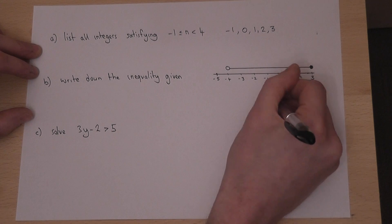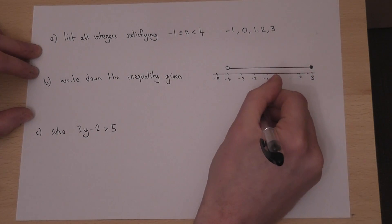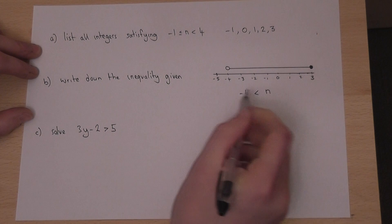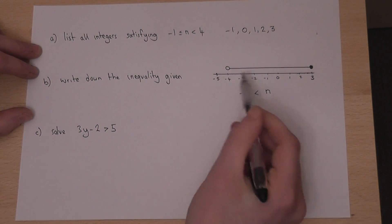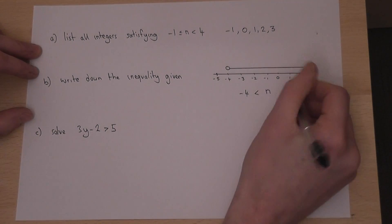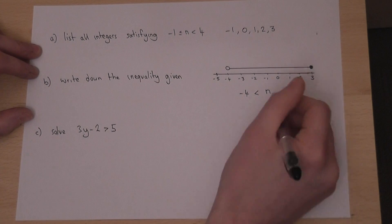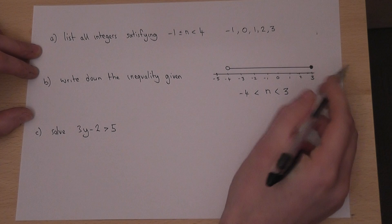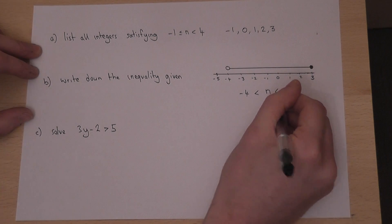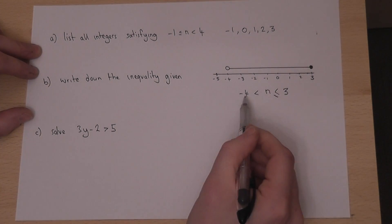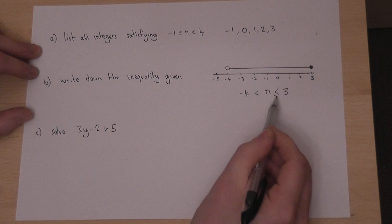So our value n in this case is bigger than minus 4, but not including minus 4, and we can go as high as 3. So our number is less than 3 but we can include 3. So n is bigger than minus 4 and less than or equal to 3.